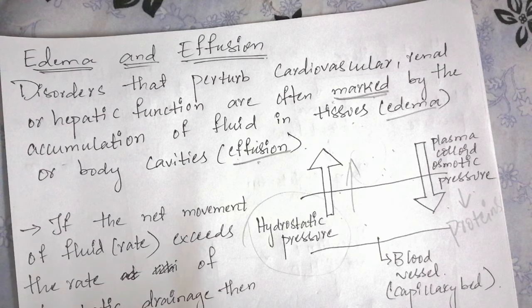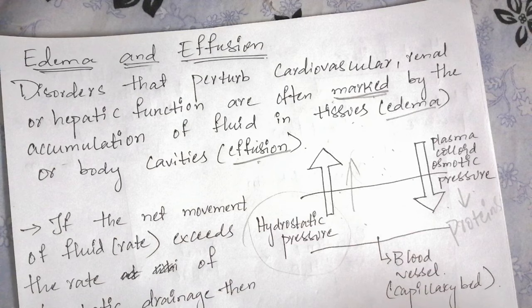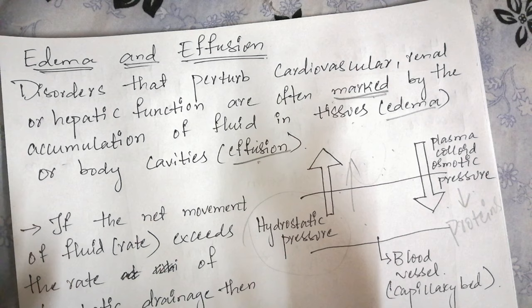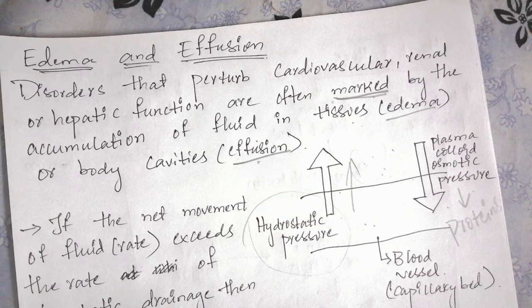In a normal person, the movement of fluid from the blood vessel into the interstitial spaces or body cavities is controlled mainly by two pressures: hydrostatic pressure and plasma colloid osmotic pressure. Hydrostatic pressure pushes fluid out of the blood vessels into the interstitial space, whereas colloid osmotic pressure — due to proteins — pulls fluid back into the blood vessel.